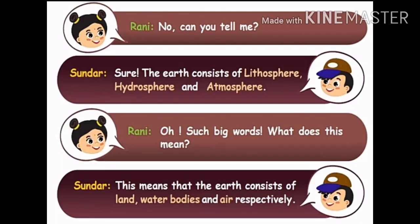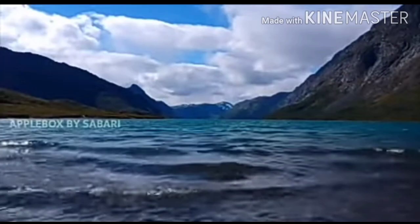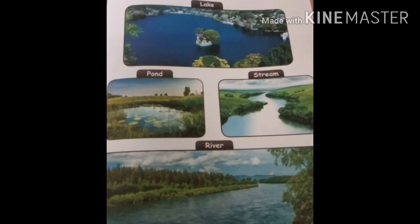Rani said: Oh, such big words! What does this mean? Sundar said: This means that the earth consists of land, water bodies and air respectively. That is, lithosphere is land on earth, hydrosphere is water on earth, and atmosphere is air on earth. Then Rani, with great excitement, asked about the water they saw — the water from oceans, seas and other water bodies are called hydrosphere.